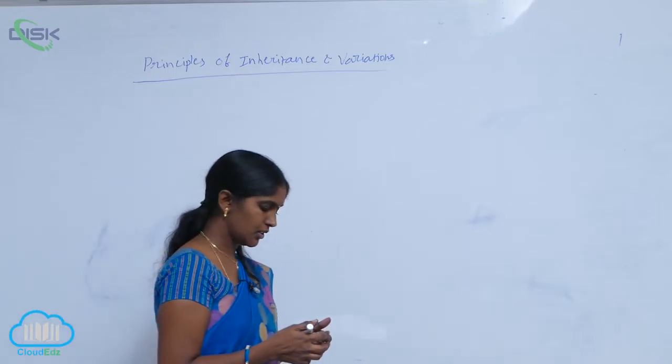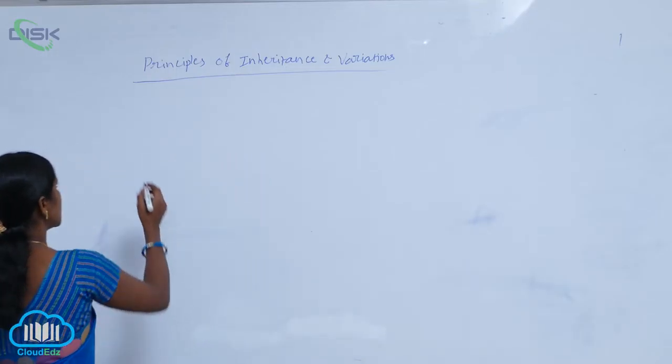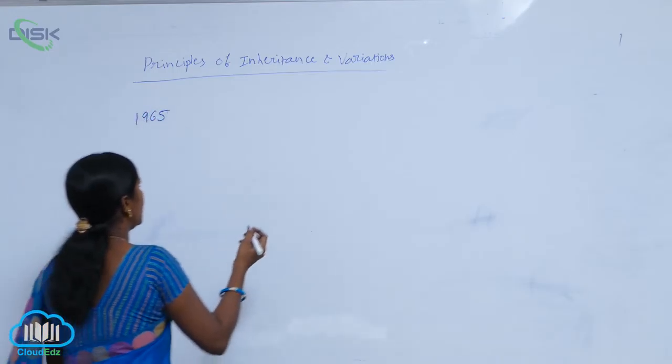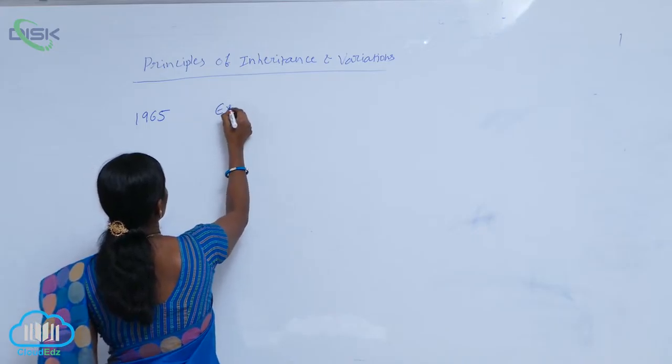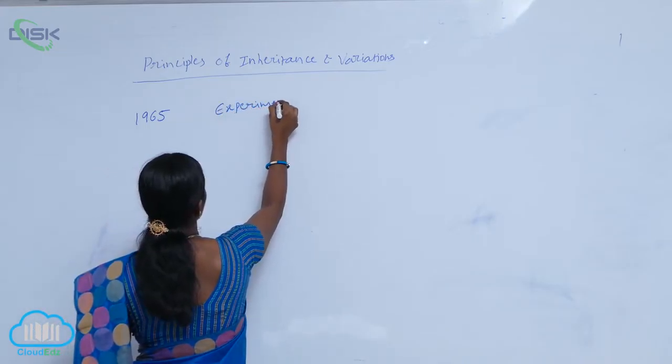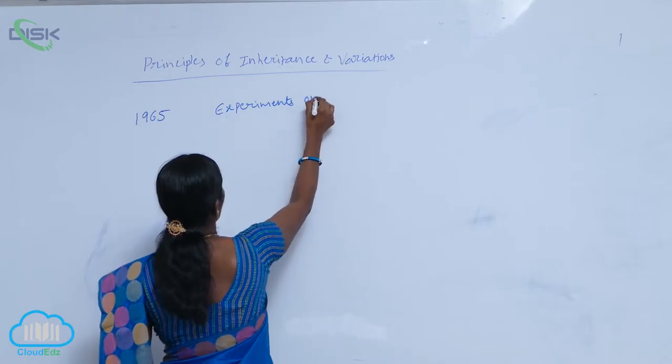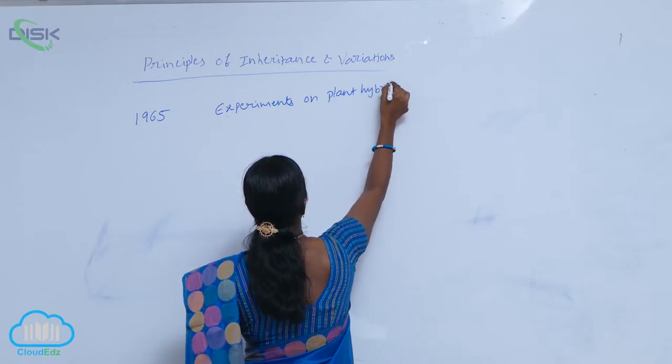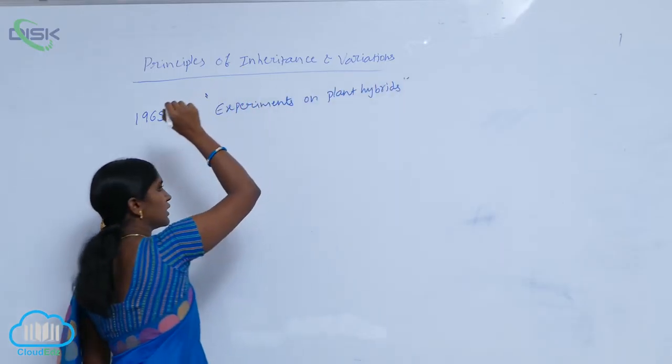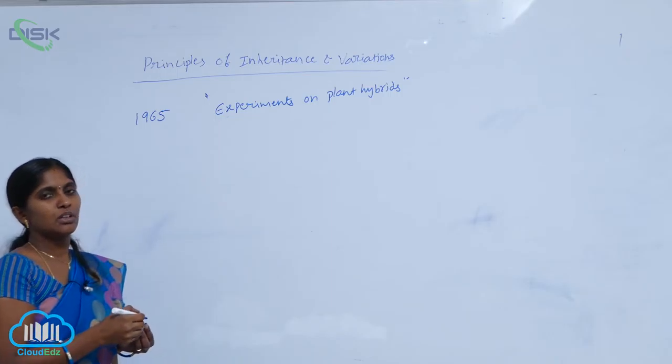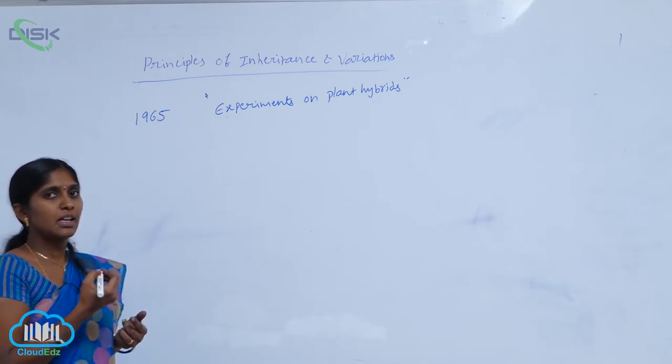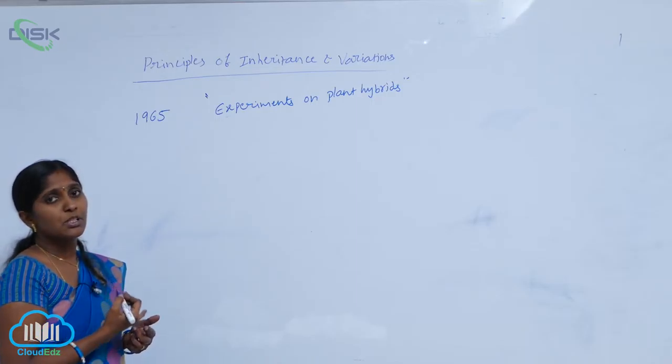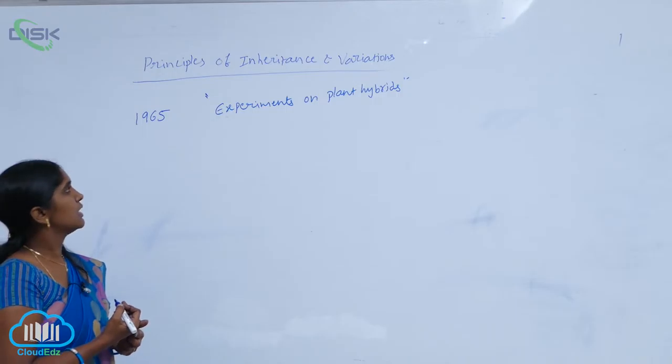Mendel published his work in 1965. In the publication, the title is Experiments on Plant Hybrids. He published his complete hybridization work: Monohybrid Cross, Dihybrid Cross, and Mendel Principles - those are principles of inheritance.